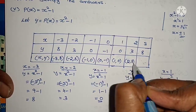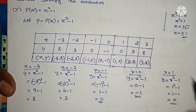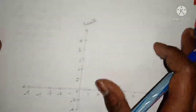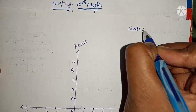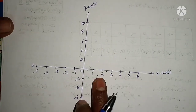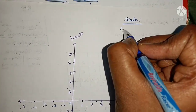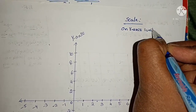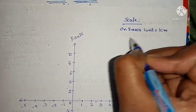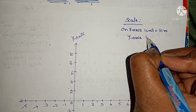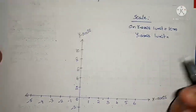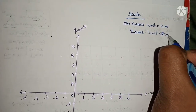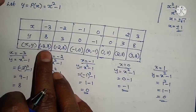Using these 2 points, we plot the graph — a rough graph. First, the scale: on the x-axis, 1 unit equals 1 cm. On the y-axis, 1 unit equals 2 cm. Now we plot the points.